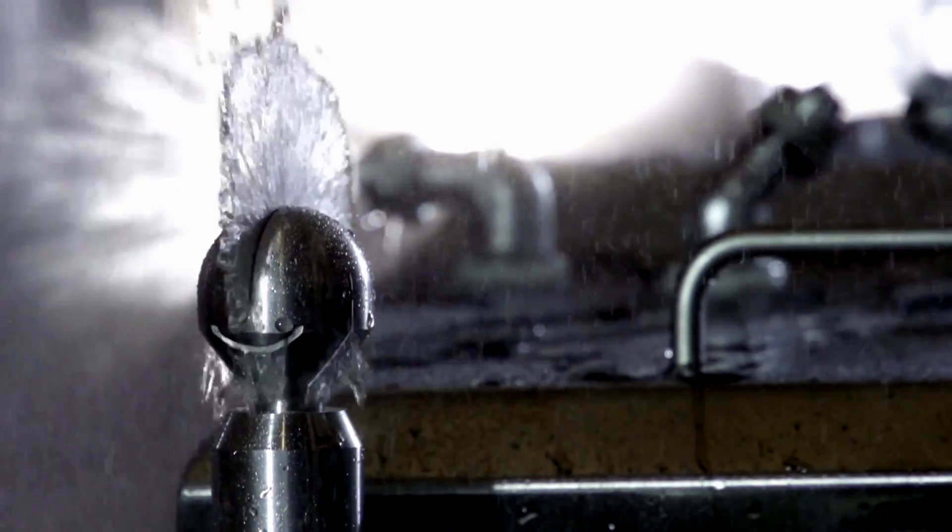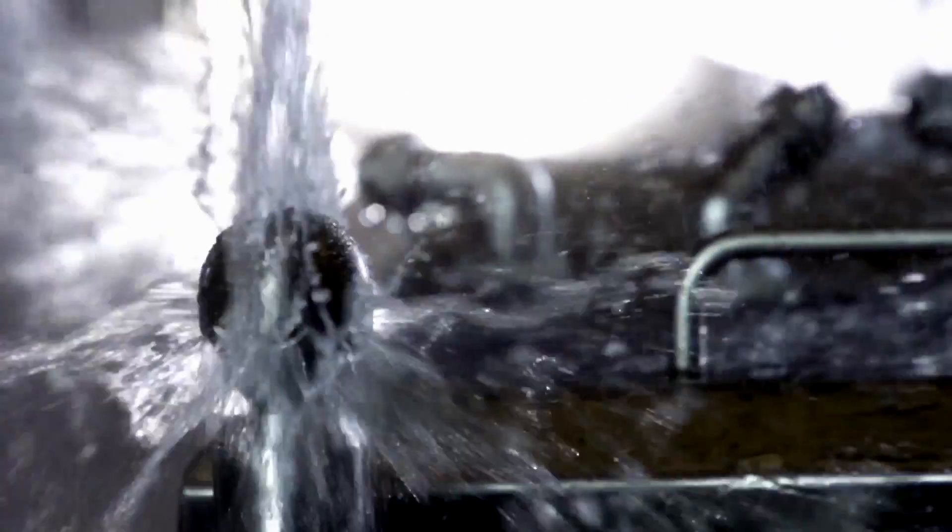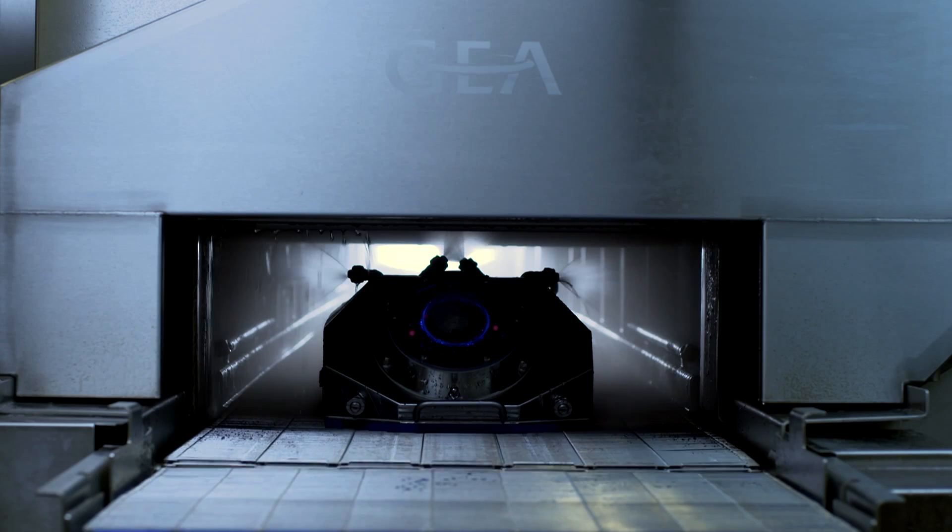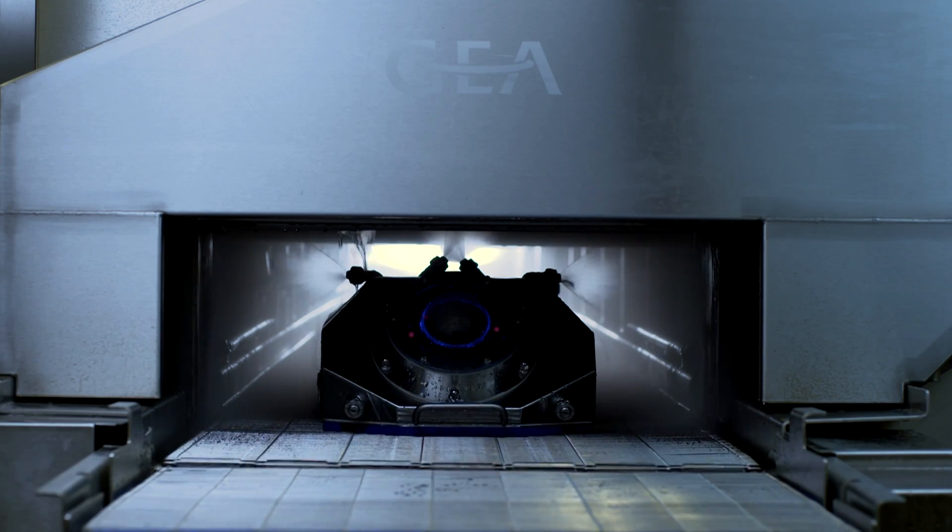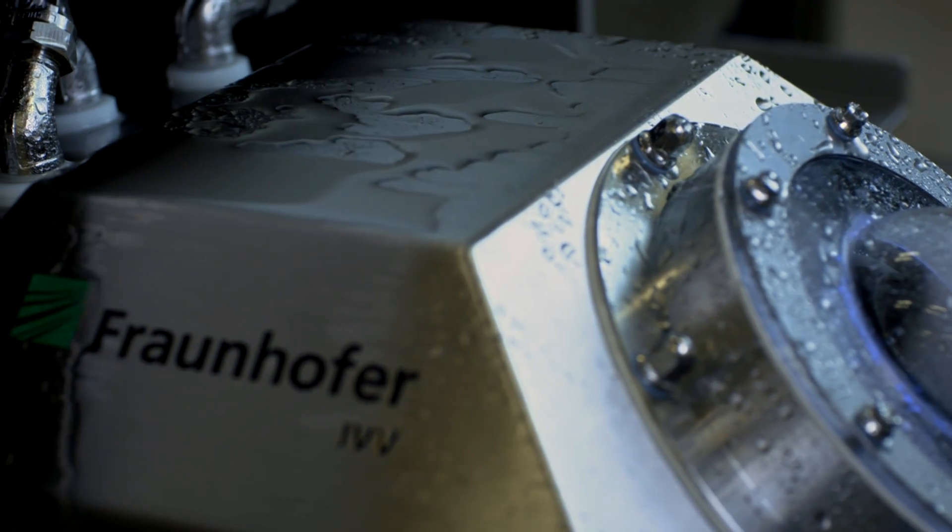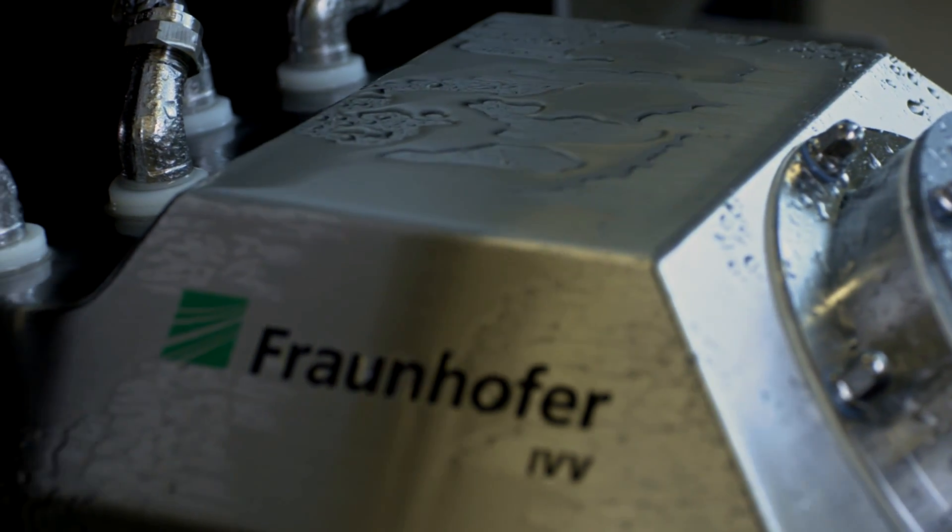The Fraunhofer IVV robot precisely adjusts the intensity of the cleaning to the degree of soilage. In addition, the robot delivers logged cleaning results. And that contributes toward food safety and increases the efficiency of the entire production process.